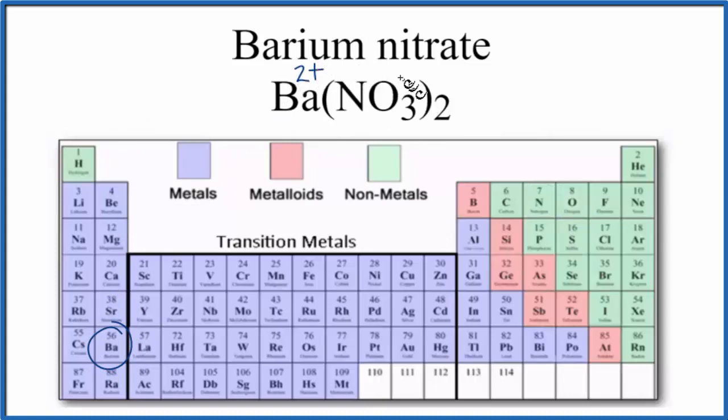Then the nitrate, you just need to memorize that NO3, the nitrate, has a 1 minus charge. We just write a minus. So we have 2 times the 1 minus. We have 2 minus, 2 plus. Those charges balance out, and we have a net charge of 0.